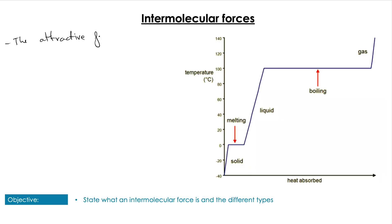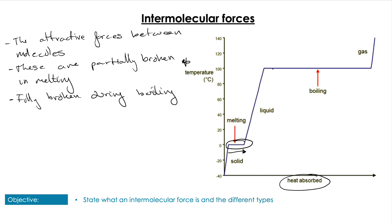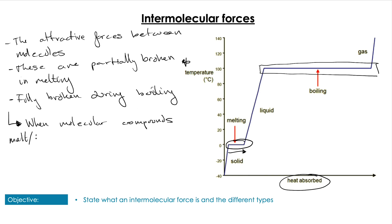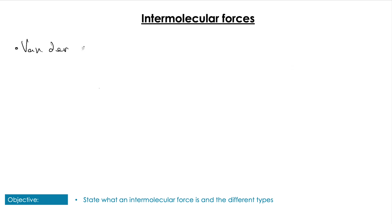Turning our attention to intermolecular forces: these are the attractive forces that act between simple covalent molecules. They are partially broken when we go from solid to liquid and fully broken when we go from liquid to gas. Importantly, during these state changes we're not breaking the compounds down — we're just breaking these intermolecular forces. On the graph you can see evidence for this: as we increase temperature, at the melting and boiling points the substance keeps absorbing energy but does not increase in temperature, evidencing the energy required to overcome these attractive intermolecular forces.